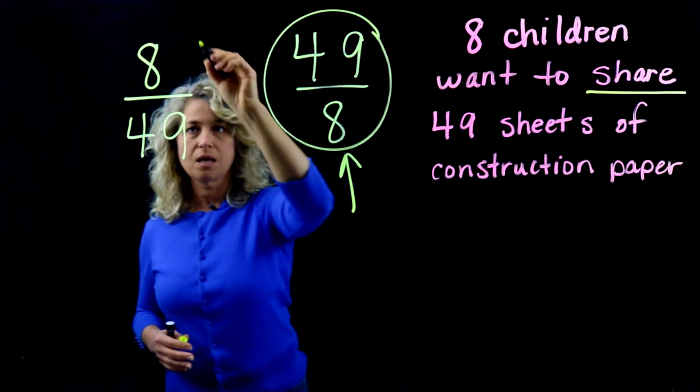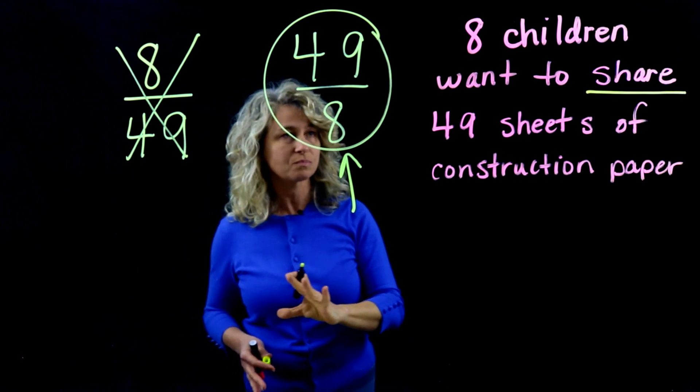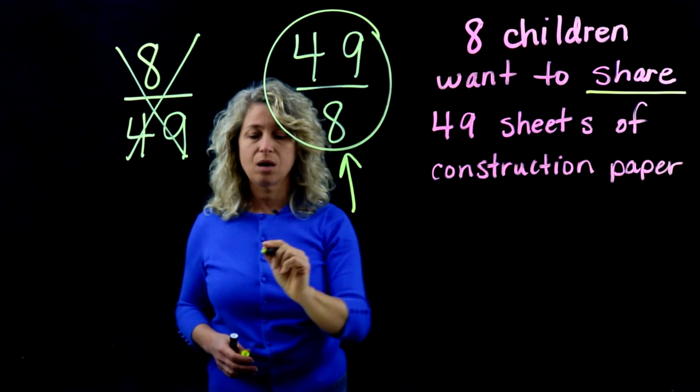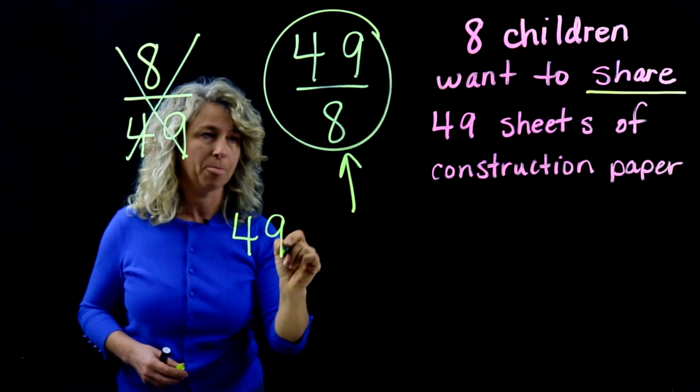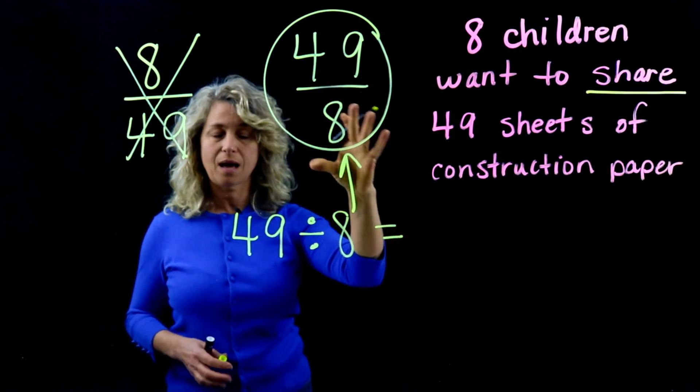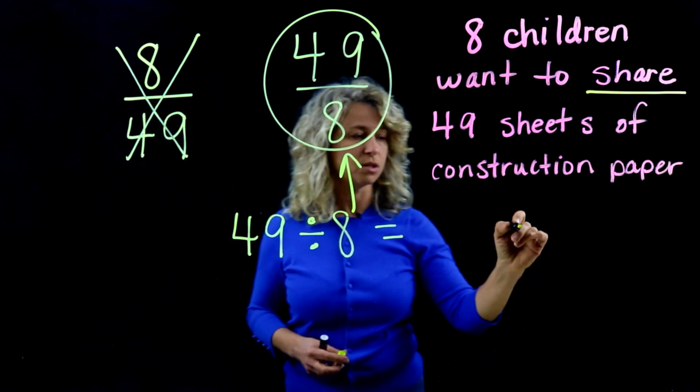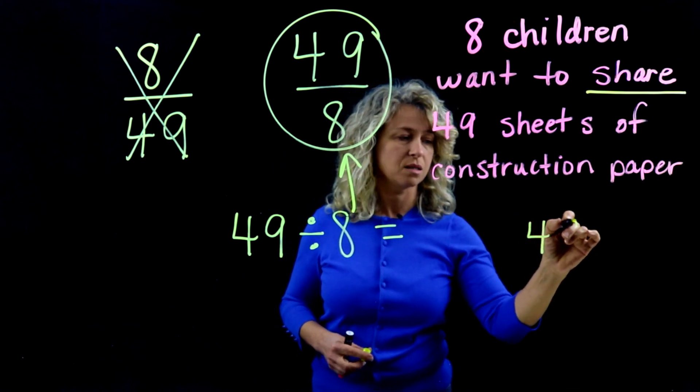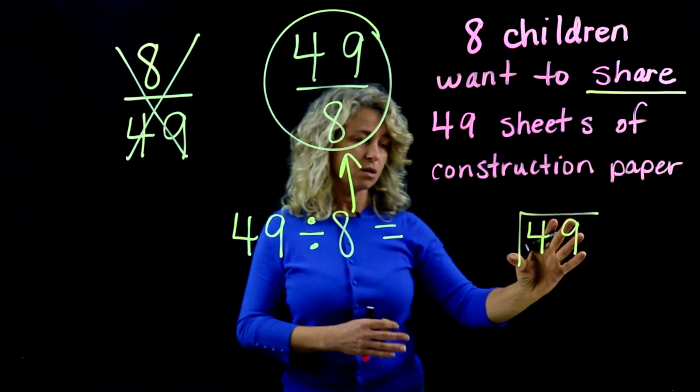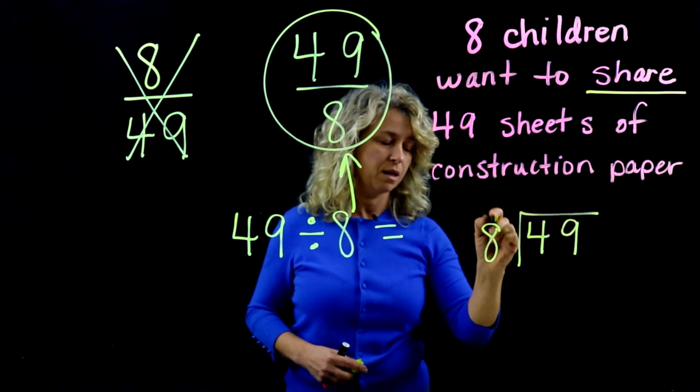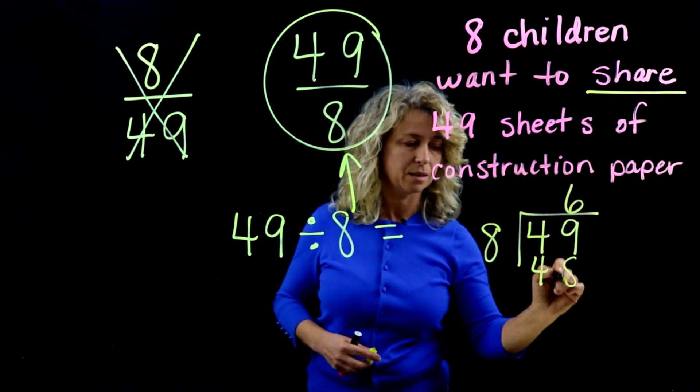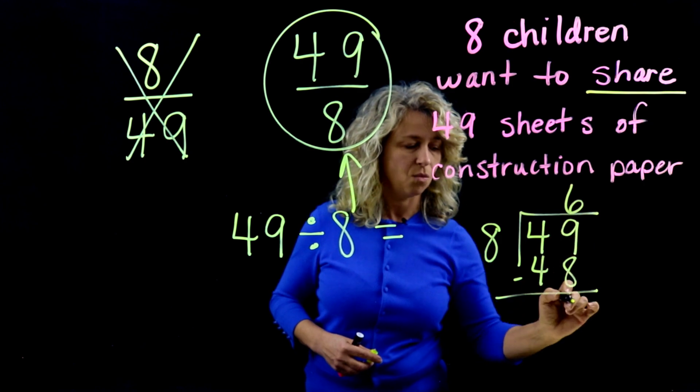All right, so what does this mean, 49/8? So we know that 49 divided by 8 is the meaning of 49/8. Okay, we could come over here and just make this into also a division problem like long division: 49 always goes in the house first, 49 divided by 8. How many times will 8 go into 49? 6 times. 6 times 8 is 48, subtract and get 1.